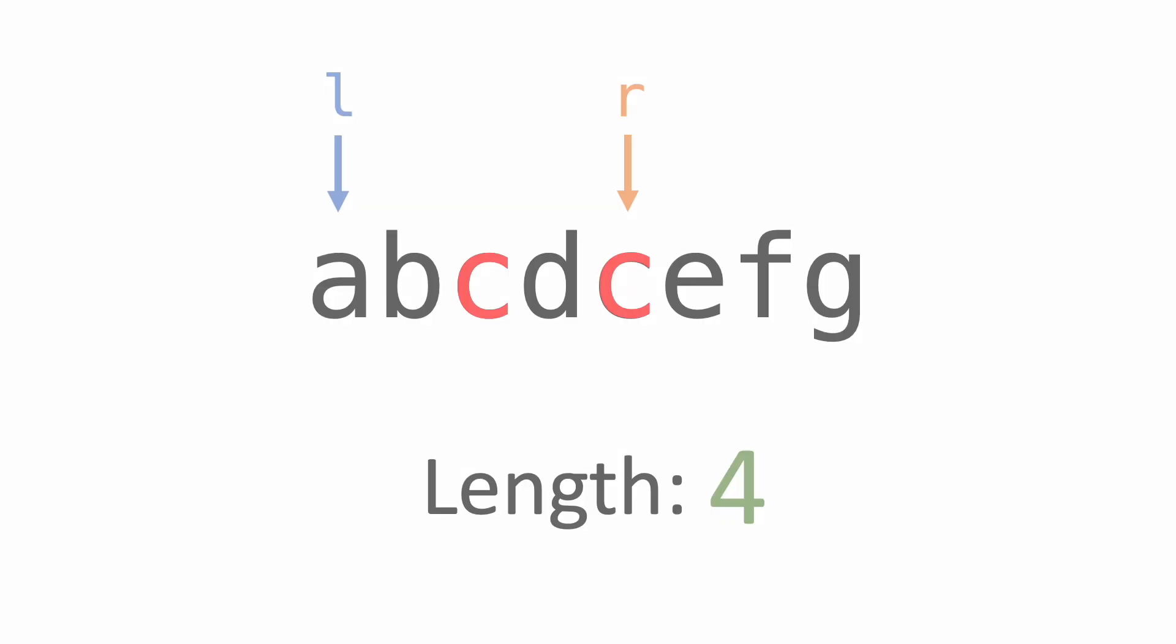So we can skip all those computations, and just move the left pointer up, and start looking at substrings starting with the second character. But notice that we haven't solved our problem yet. The letter C is still repeated.